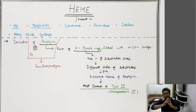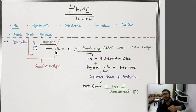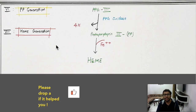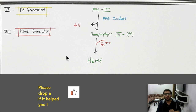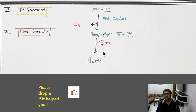So to summarize: four pyrrole rings form porphyrin, eight substitution sites give different types of porphyrin, the most common type 3 is protoporphyrin, and combining it with iron gives heme. Now in the heme synthesis pathway, heme is the last step. Let's work in reverse: heme is formed by protoporphyrin plus iron.